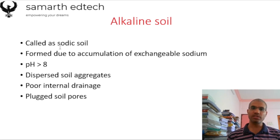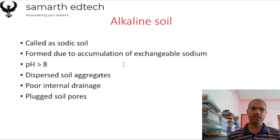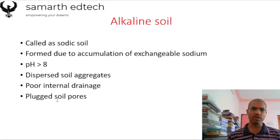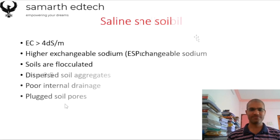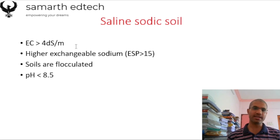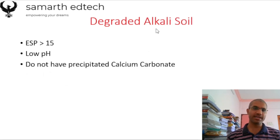Alkaline soils, also called sodic soils, form due to accumulation of exchangeable sodium. Their exchangeable sodium percentage (ESP) is greater than 15, pH is greater than 8, soil aggregates are dispersed, internal drainage is very poor, and soil pores are plugged. Saline-sodic soil has electrical conductivity greater than 4 and ESP greater than 15; soils are flocculated and pH is less than 8.5.